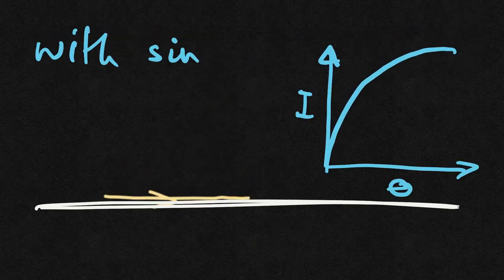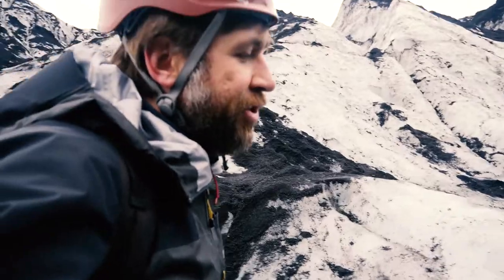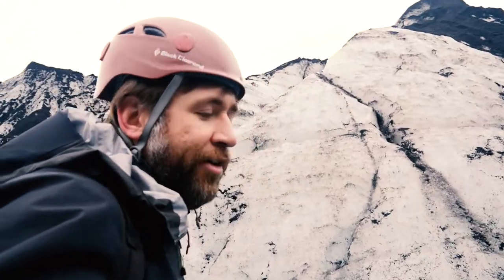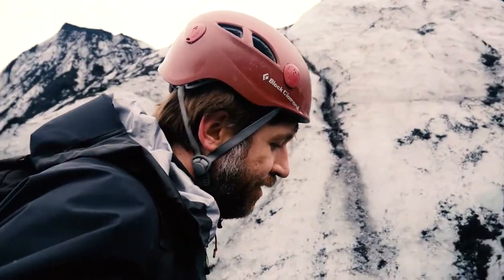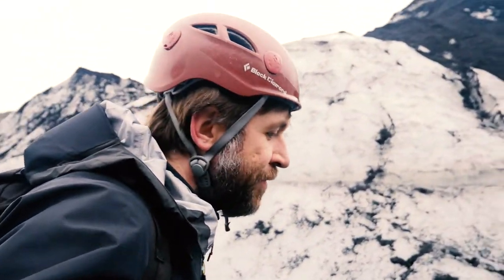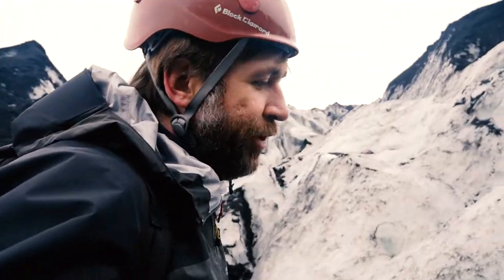On the glacier we're walking on, it's obviously the Sun's energy which is causing it to melt. Although it's the middle of the day right now, the Sun is not very high in the sky — it's at a very low angle. So the equation for intensity becomes: intensity equals power over area, multiplied by sine theta, where theta is the angle of the Sun onto this point.